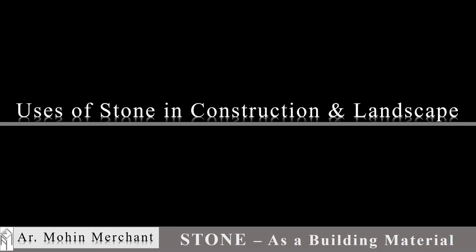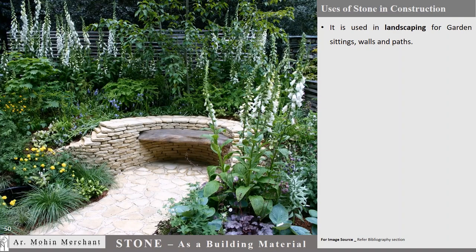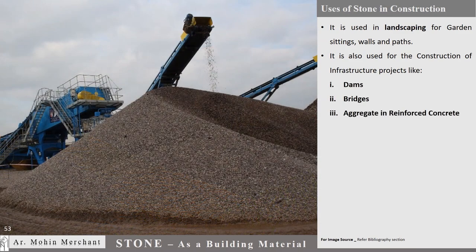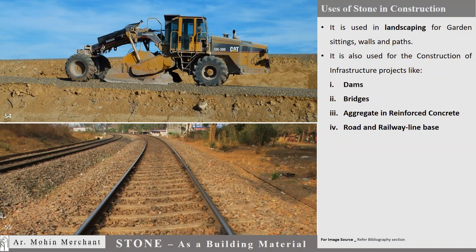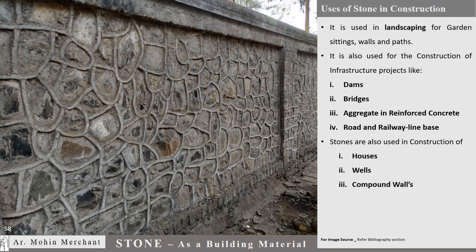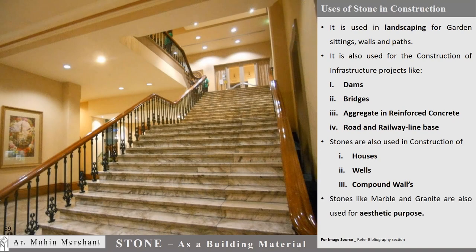Now let us see the uses of stone in construction and landscaping. Stones are used in landscaping for garden sittings, walls, and paths. They are also used for the construction of infrastructure projects like Dams, Bridges, Aggregate and reinforced concrete, and Road and railway line base. Stones are also used in the construction of Houses, Wells, and Compound walls. Stones like marble and granite are also used for aesthetic purposes.